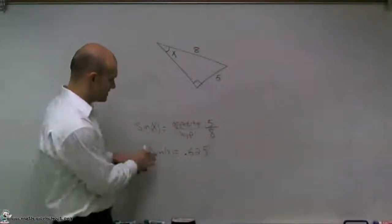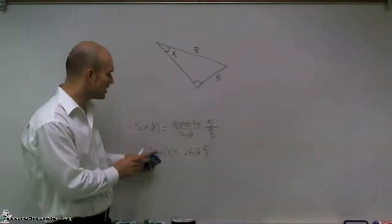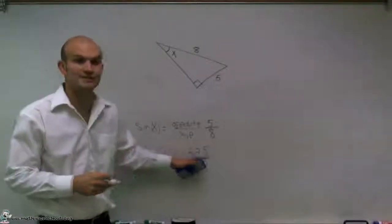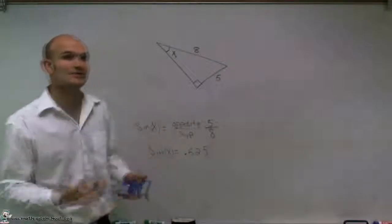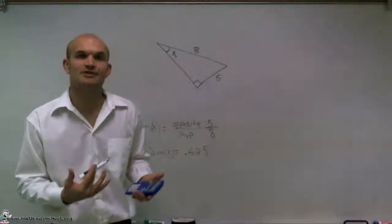So what that says now is we have the sine of our angle x equals 0.625. But we want to find out what is the value of x. So what I need to do is I need to undo my sine function.